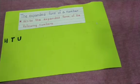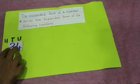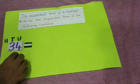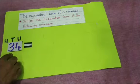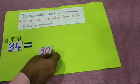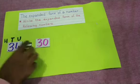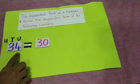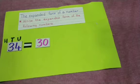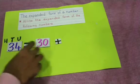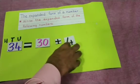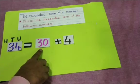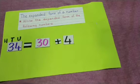Our next number is 34. 34 means, how many tens are there? 3 tens are there. 3 tens means what? 3 tens means 30. How many units are there? 4 are there. So you have to put the plus sign and show 4. So 34 = 30 + 4.